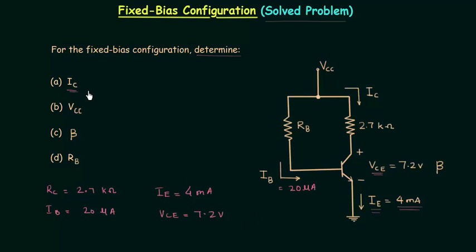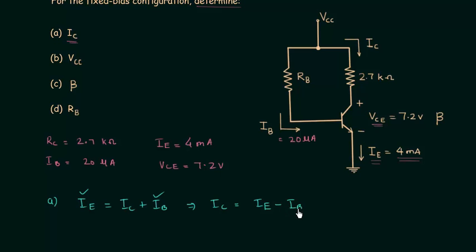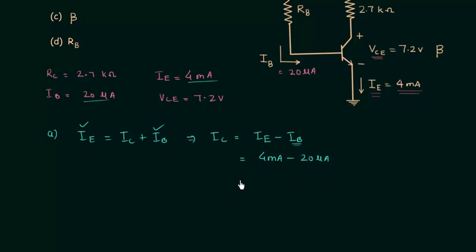We have to calculate the collector current IC, which is also the output current of this circuit. We already know that IE equals the sum of IC and IB. So IC is equal to IE minus IB, which is 4 milliamps minus 20 microamps. We can also write 20 microamps as 0.02 milliamps.